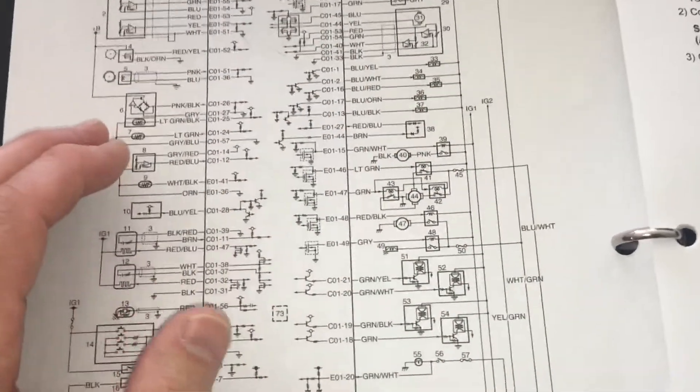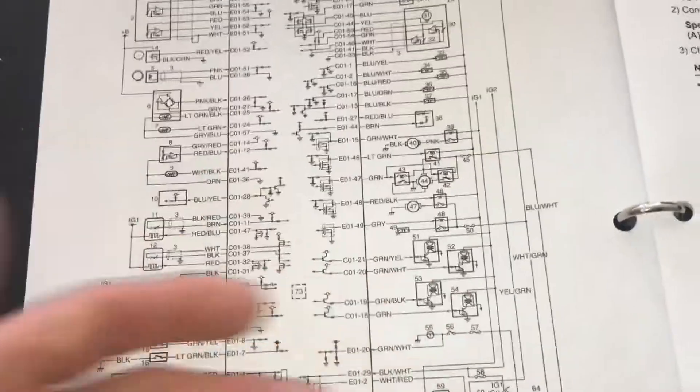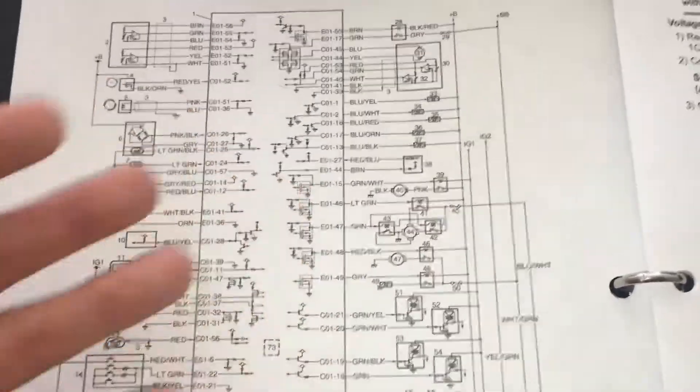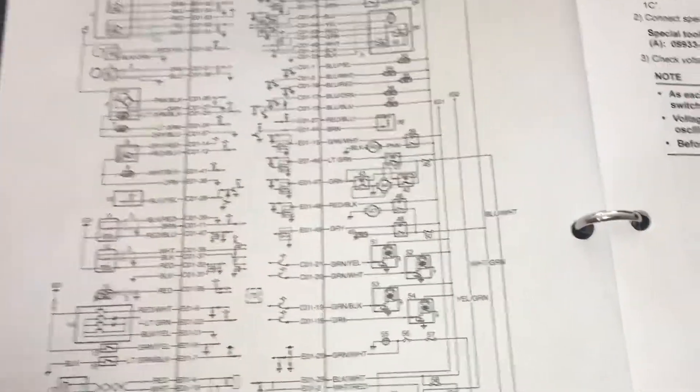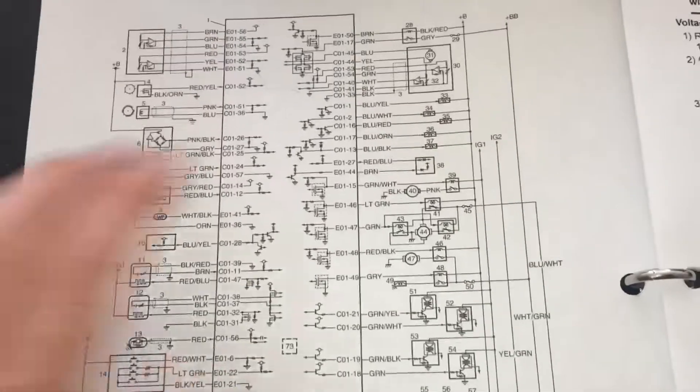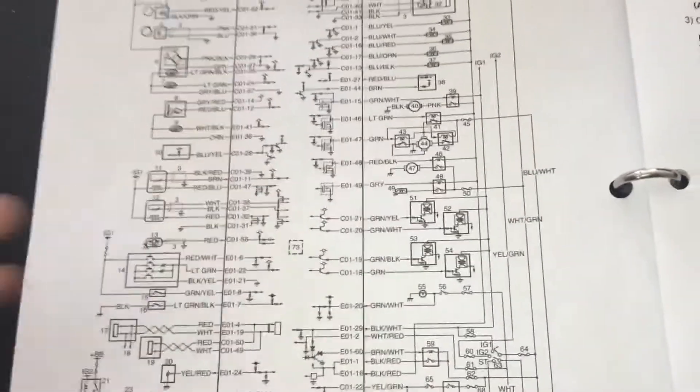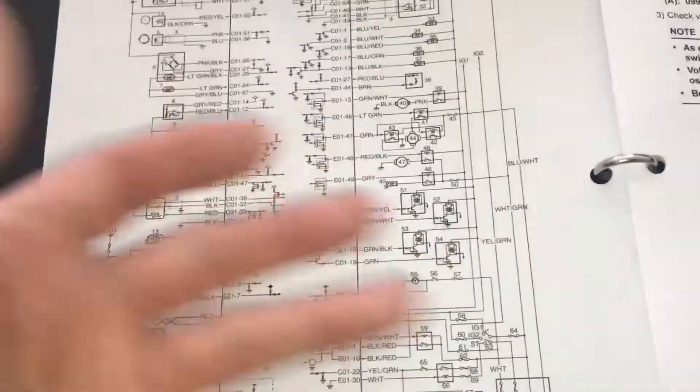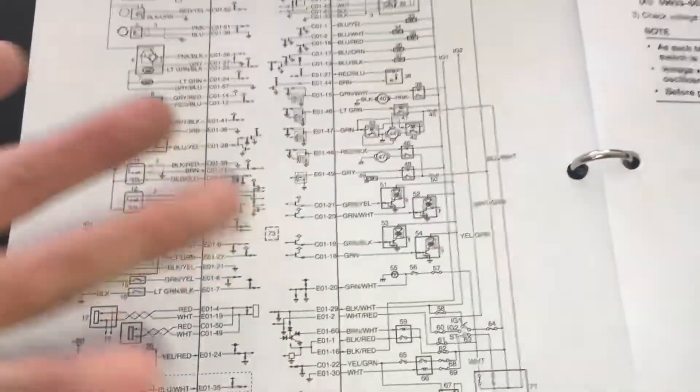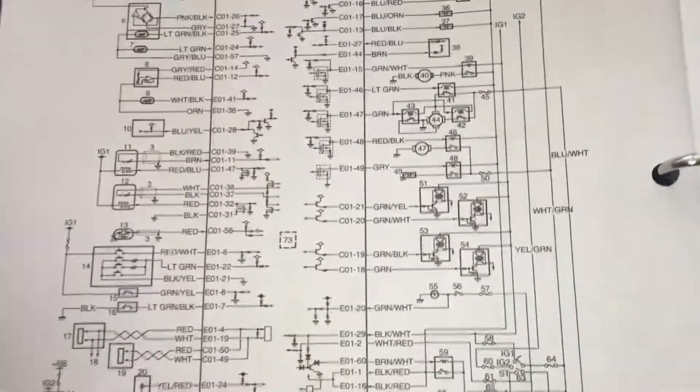Obviously there's differences between injector types and different types of ignition coils and whatnot, but for the most part, of course there's exceptions, it's pretty much a generic model for us, the SX4. It's not a new car by any stretch of the imagination, but it's not ancient either, right? Mine's of 2009.